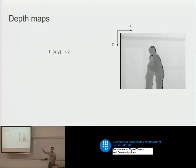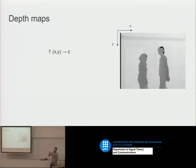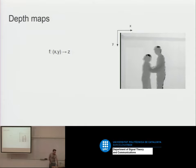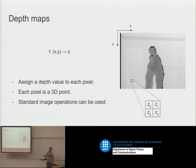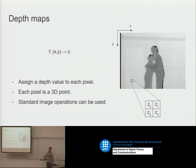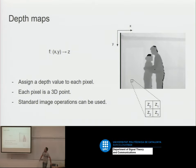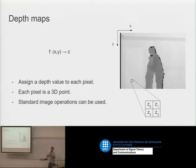With that example, we can connect with depth maps. Depth maps are just images that at each pixel position have a depth value — we have x, y, and we just need a z. Since we are very used to working with images in deep learning, all the operations that we know for images can be applied to depth maps. Basically, we assign a depth to each pixel, each pixel is a 3D point, and all standard image operations can be used.